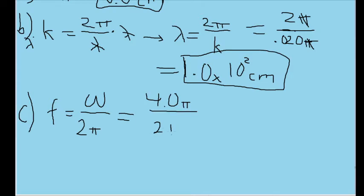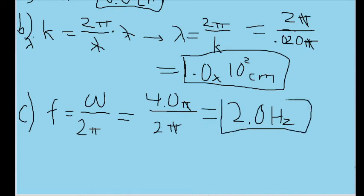The pi values cancel out, and we're just left with 4.0 divided by 2. So this is going to be a frequency of 2.0 hertz. The reason I'm not rounding to a single significant figure is because the 2 pi in the formula refers to an exact value — there's no uncertainty associated with it, so we don't count it toward significant figures. It's just going to be 2.0 with two significant figures. That is our frequency.